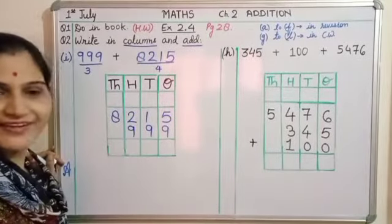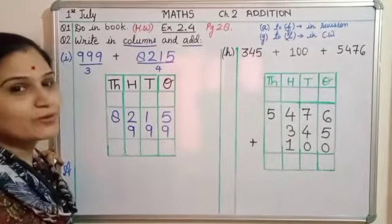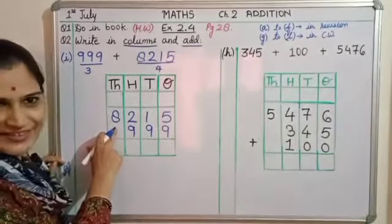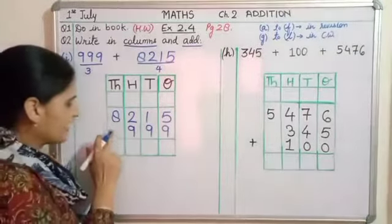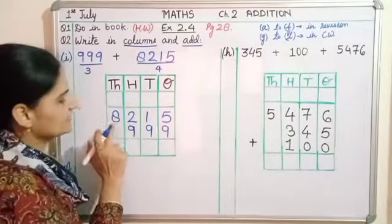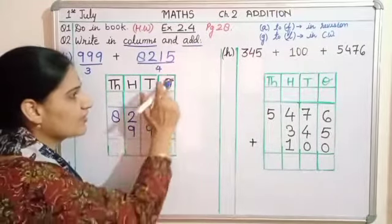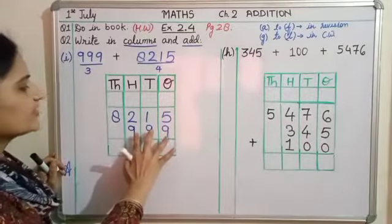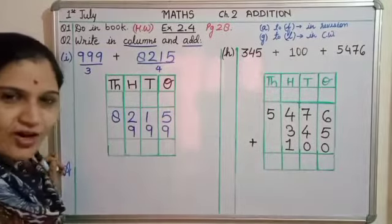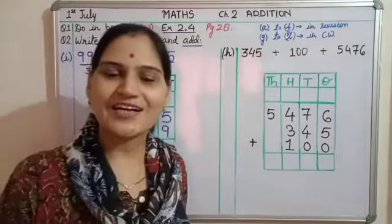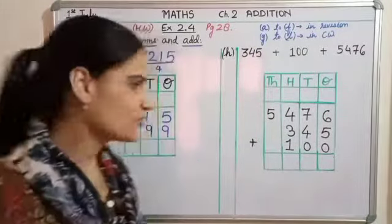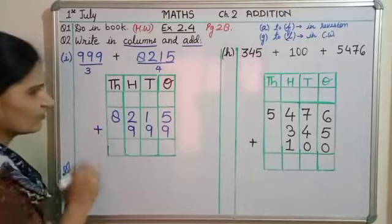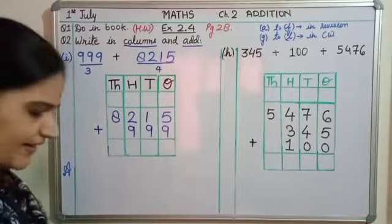So one is in the thousands place for four digit numbers. The four digit number is bigger, so you need 4 columns, and you should write it first. So it is a four digit number - eight thousand two hundred fifteen. This is the number. The three digit number we will place after that, and we have to write nine hundred ninety nine.